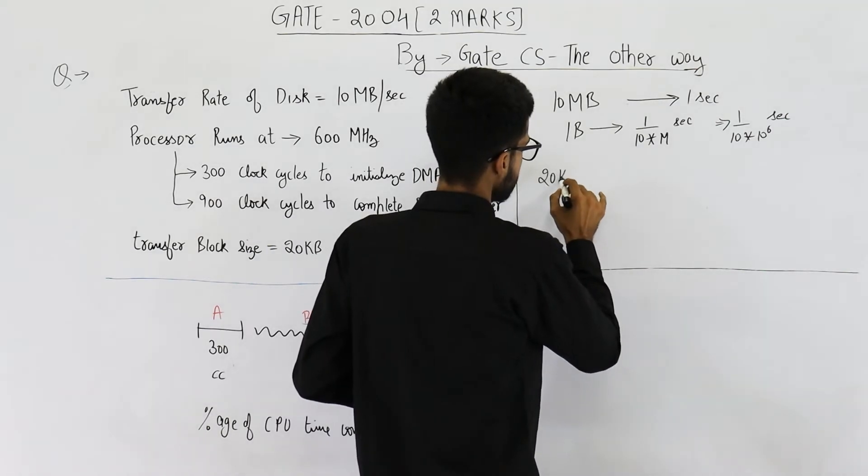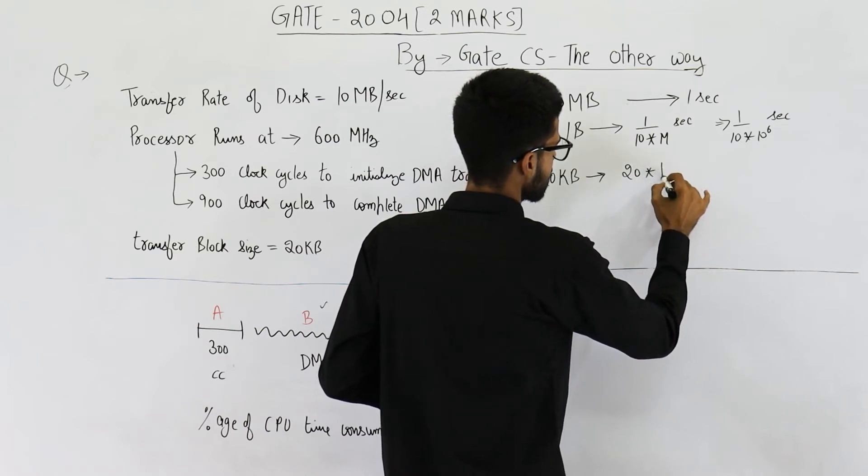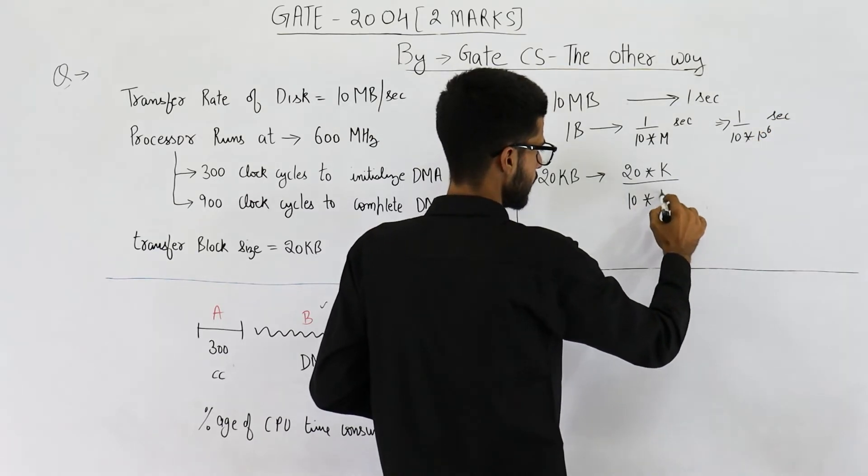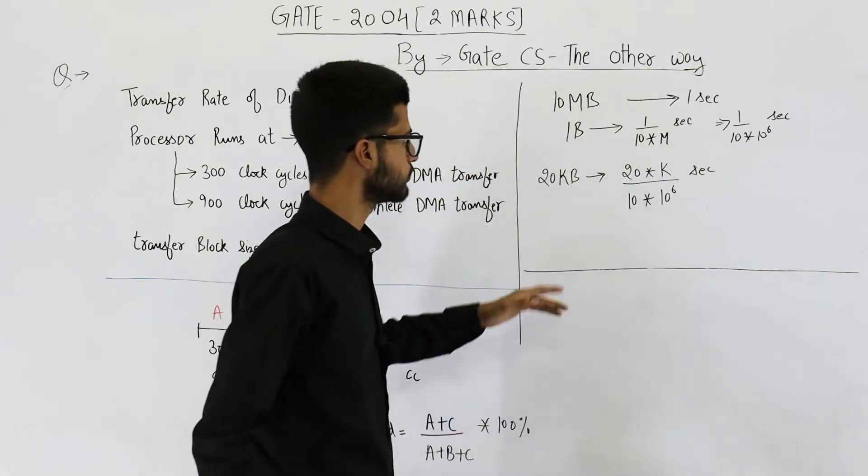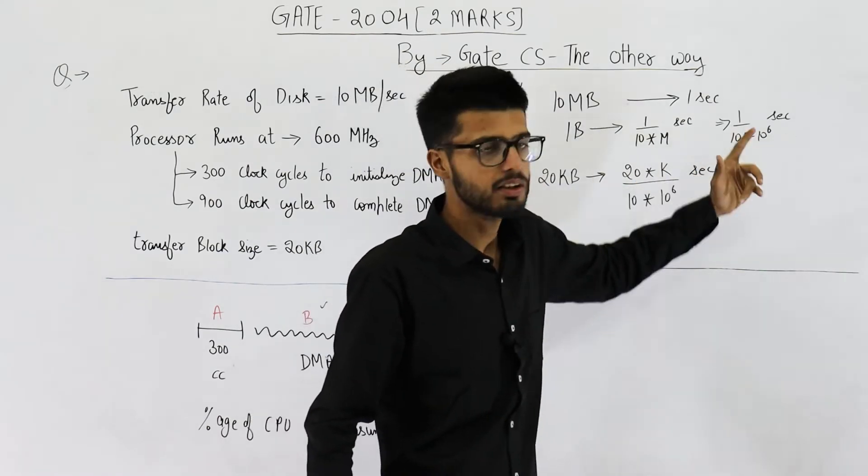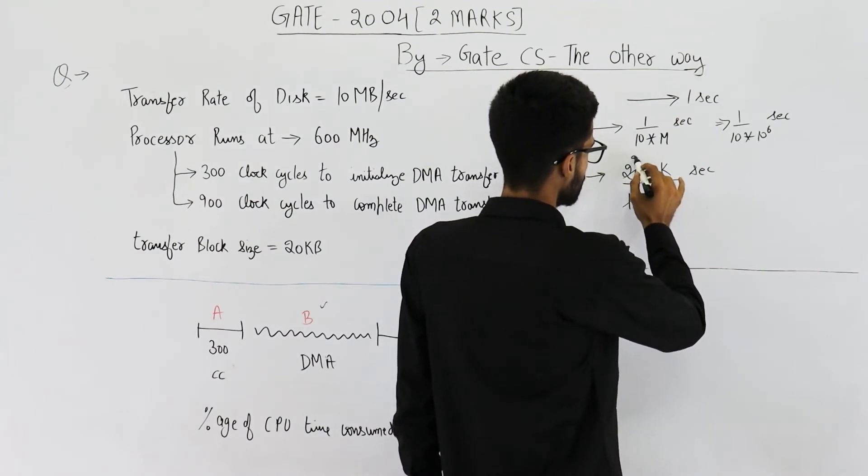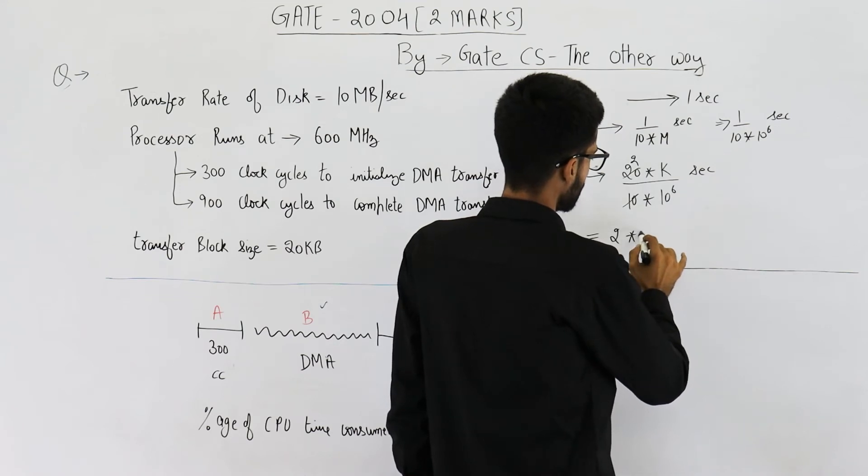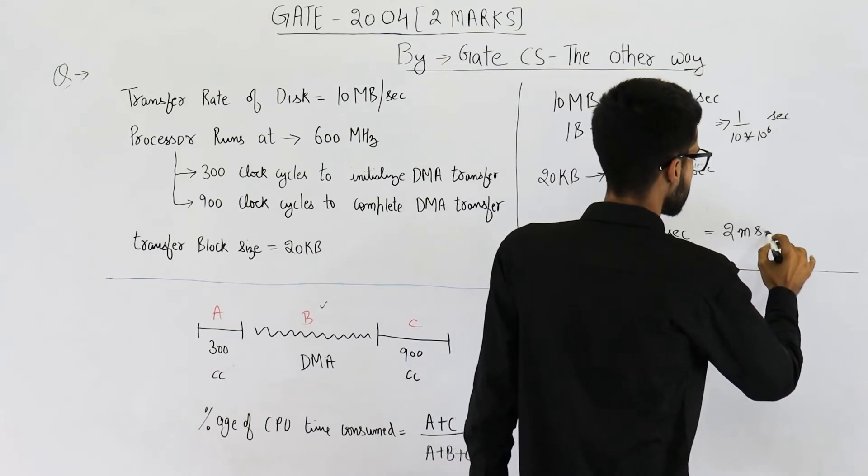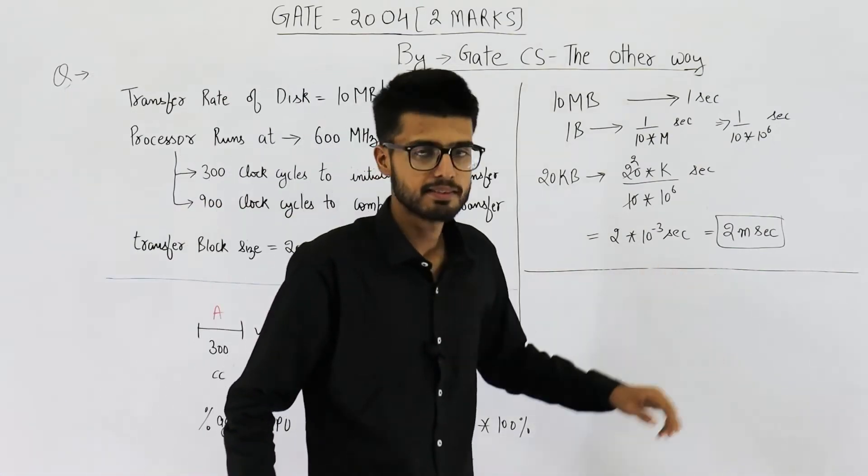Let's find out the time for 20 KB now. 20 KB will take 20 into K divided by 10 into 10 raised to the power 6 seconds. 1 byte requires this much time. 20 KB requires this into 20K. So this comes out to be 2 into 10 raised to the power minus 3 seconds, which is 2 millisecond. So we have found out that B comes out to be 2 millisecond.